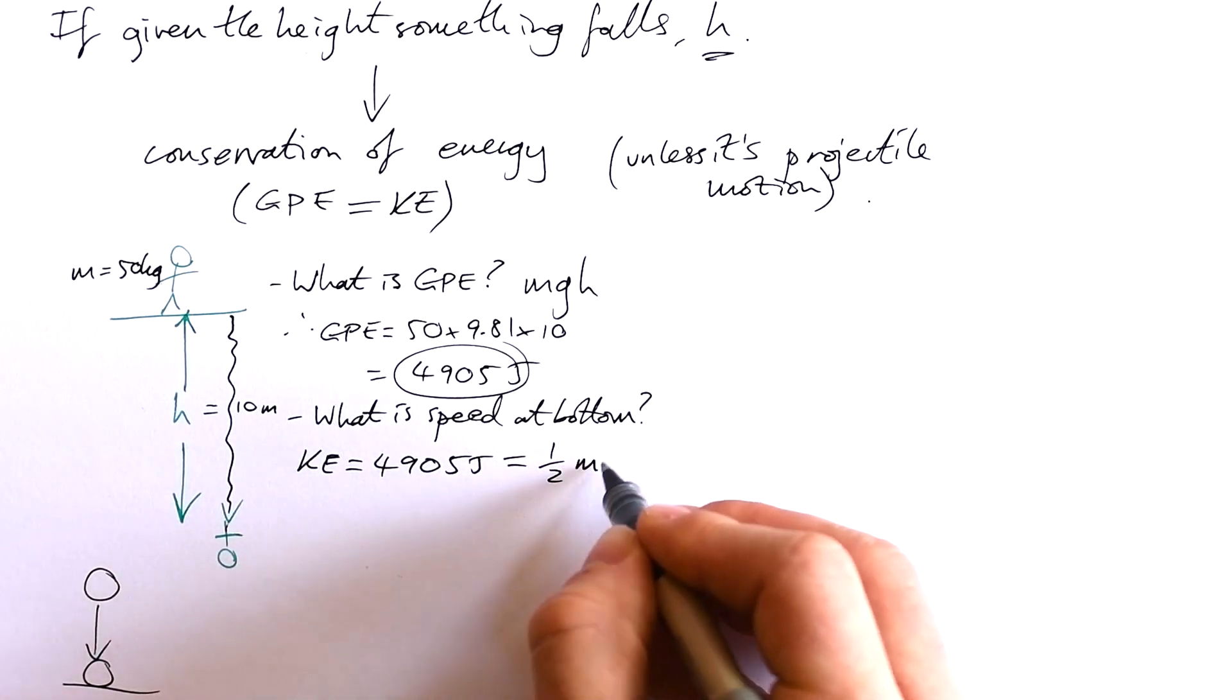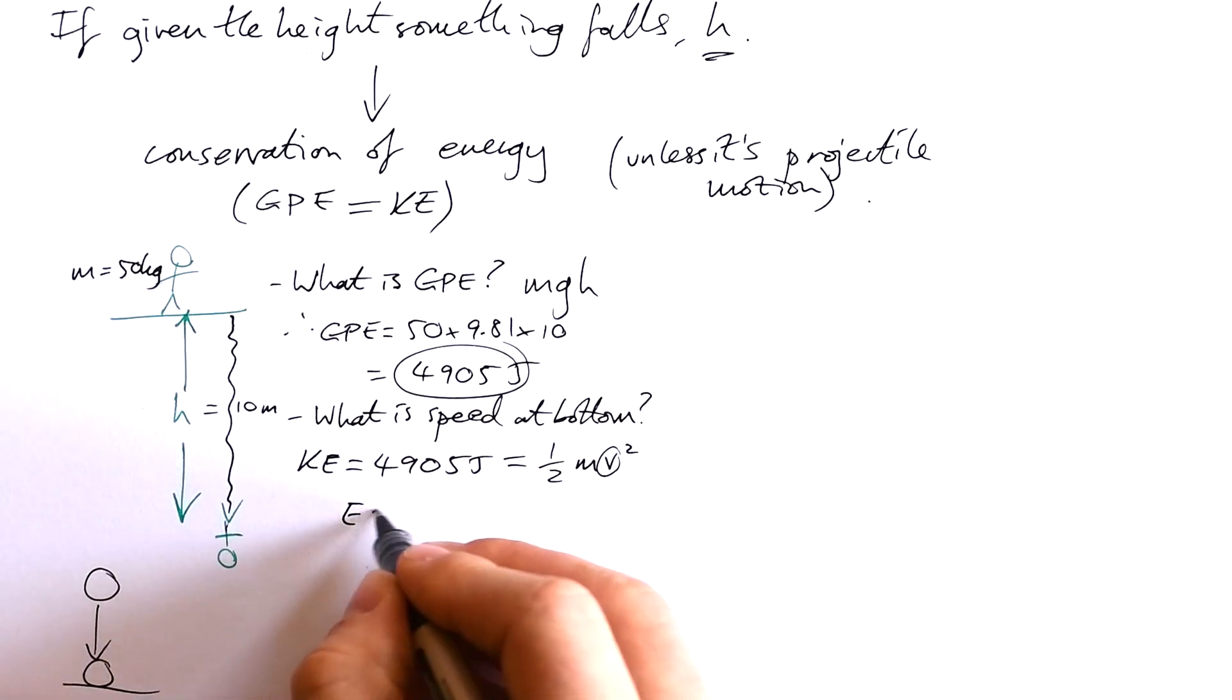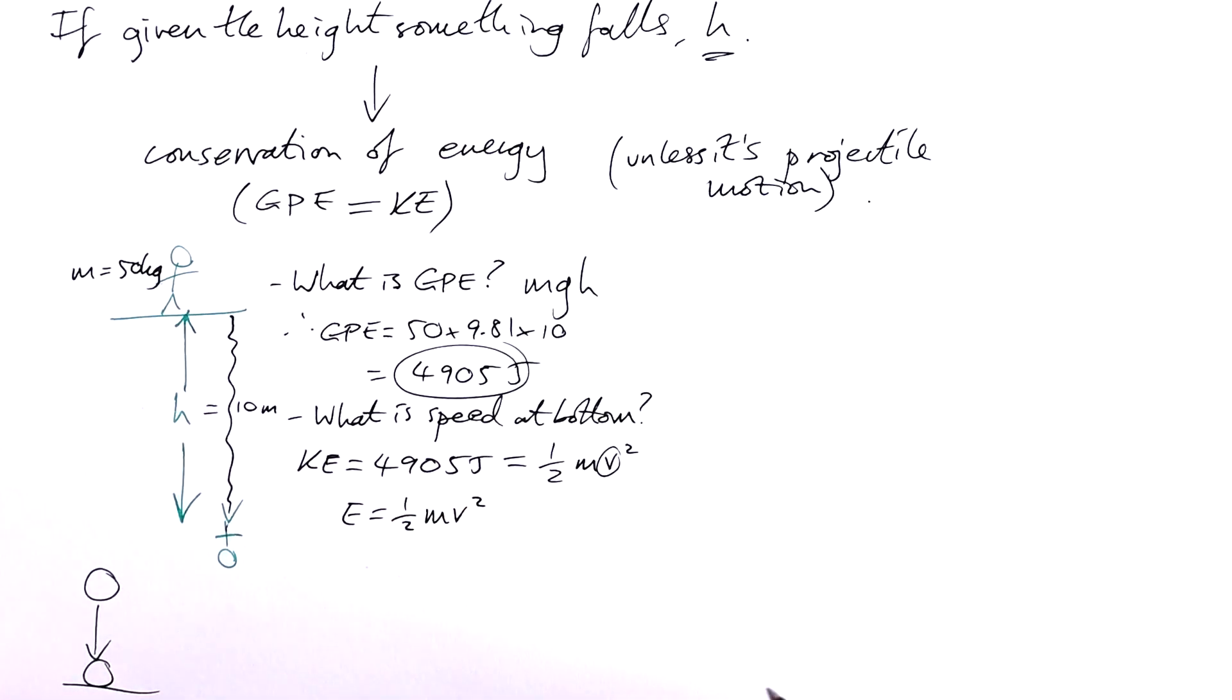We know that this is equal to half M V squared. We're trying to find V, so let's rearrange to find V squared. So let's just write this out again, E—I'm just calling it E for now, we know it's kinetic energy—equals half M V squared. In order to get rid of a half we double the whole thing, and in order to get rid of the mass we're multiplying by it right now, so we divide by it on the other side. We have V squared equals 2E over M.